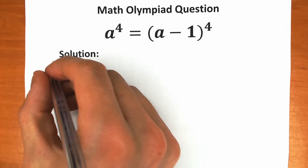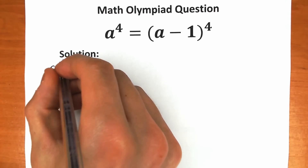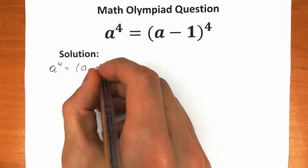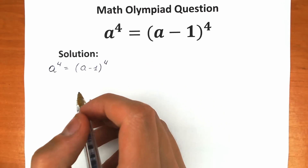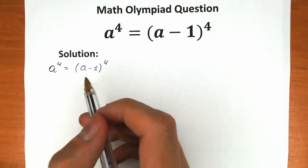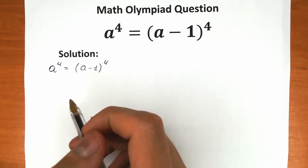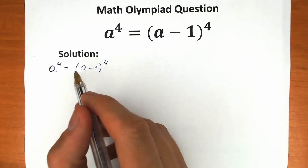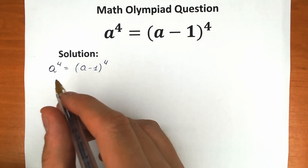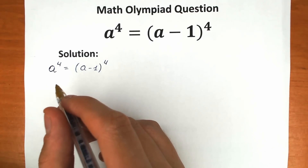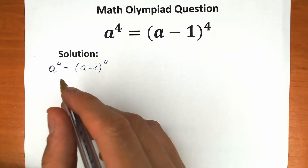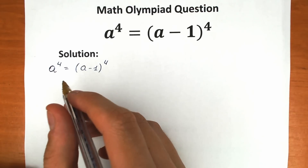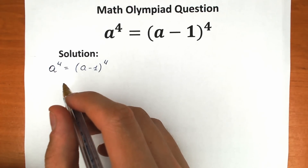First of all, let's rewrite our challenge. We have a to the fourth power equal to (a minus one) to the fourth power. A lot of students solve this by applying a fourth root on both sides and get a equal to a minus one, giving one half. But this is not a great solution — we should know the correct approach, which I'll explain fully, step by step.